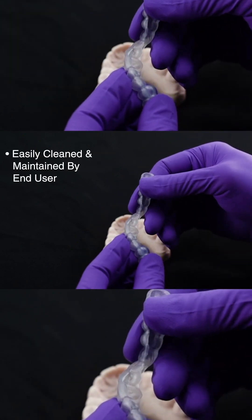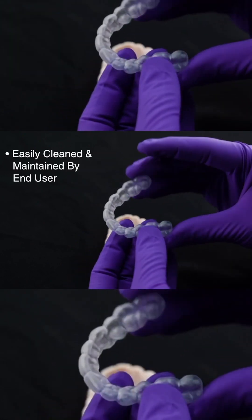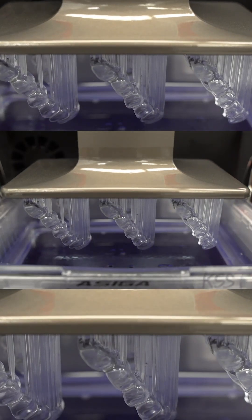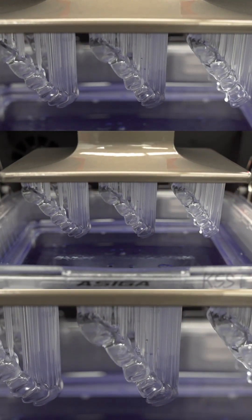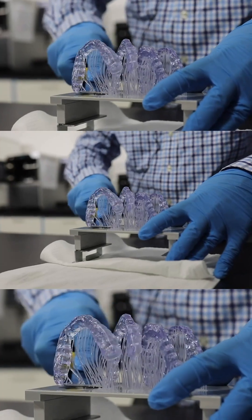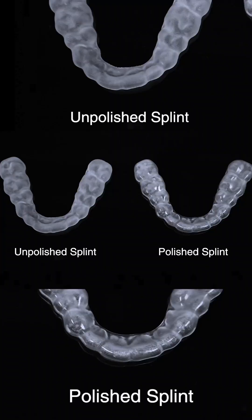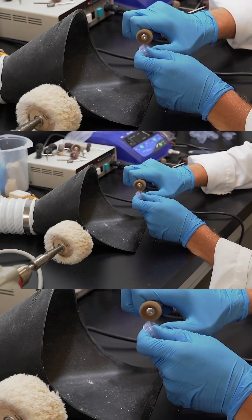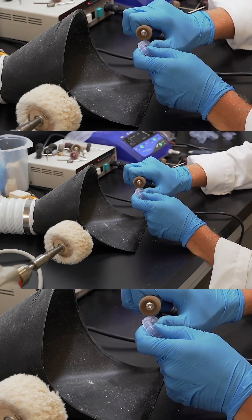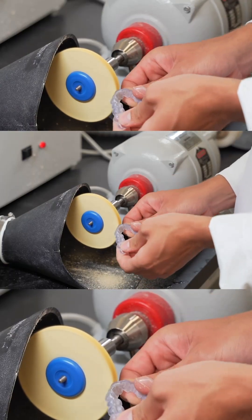It is also easily cleaned and maintained by the end user. KeySplintSoft is made in the U.S.A. and has three years of guaranteed shelf life. The formula has long-term color stability with a translucent and aesthetic appearance. It offers a highly efficient and streamlined way to manufacture splints and nightguards with significantly reduced labor and material costs.